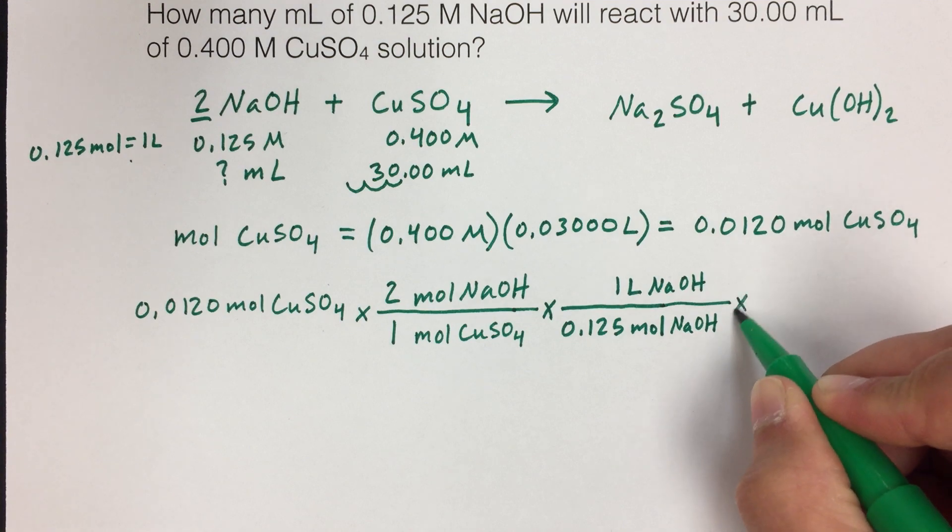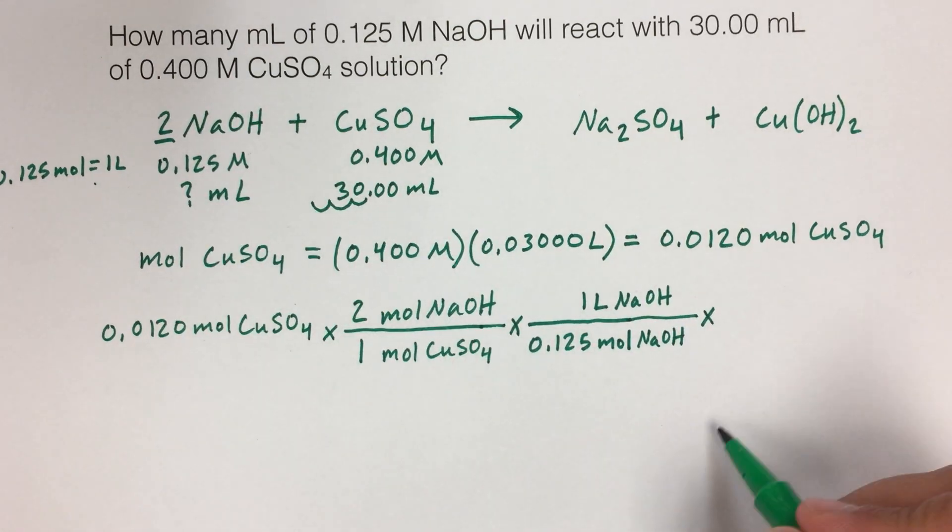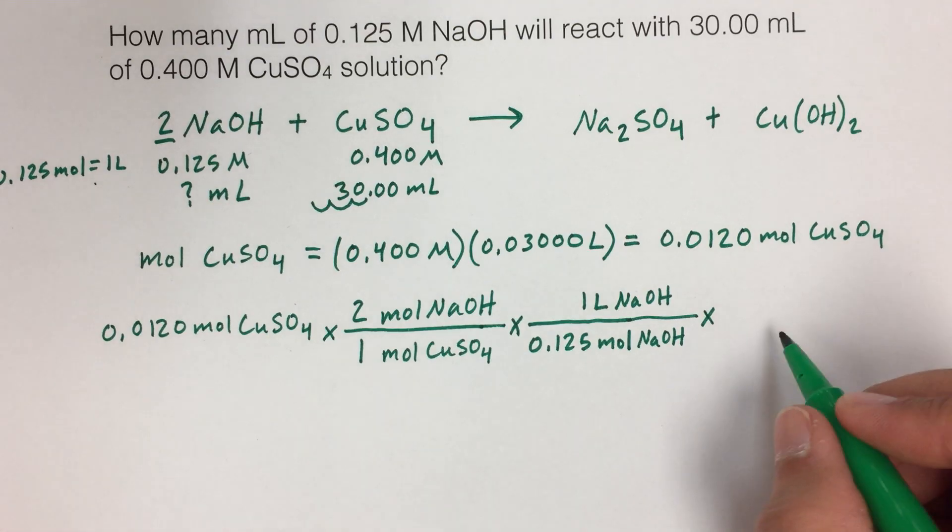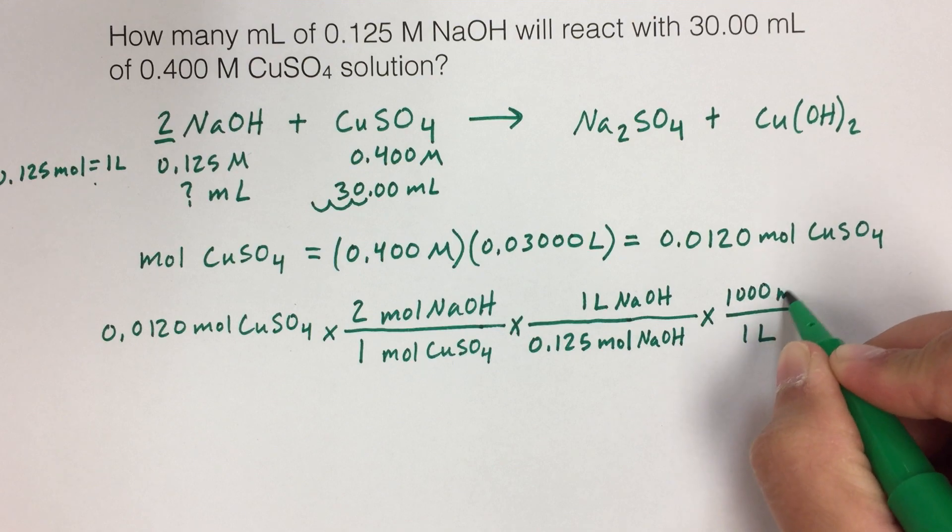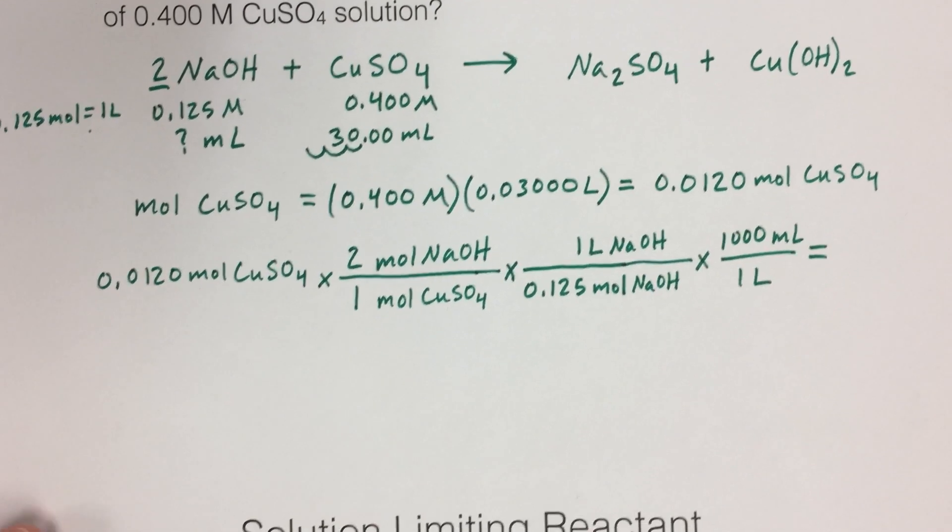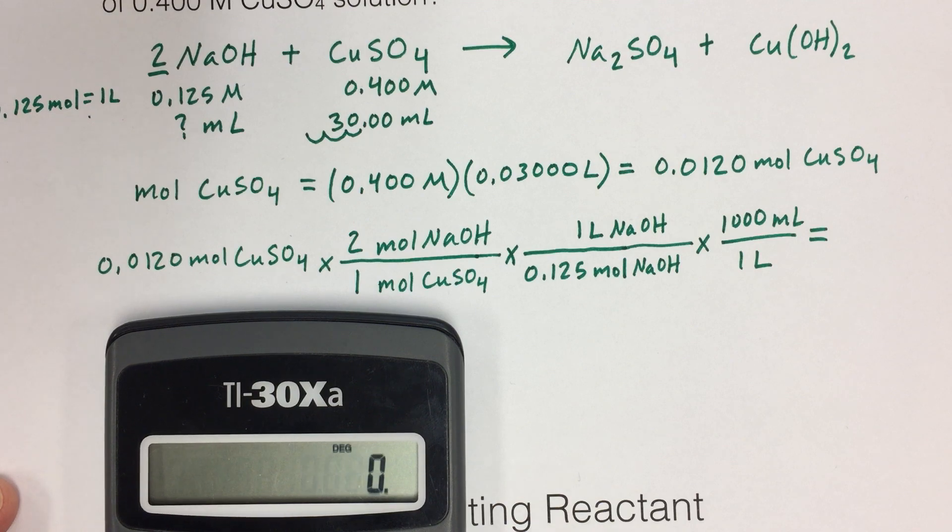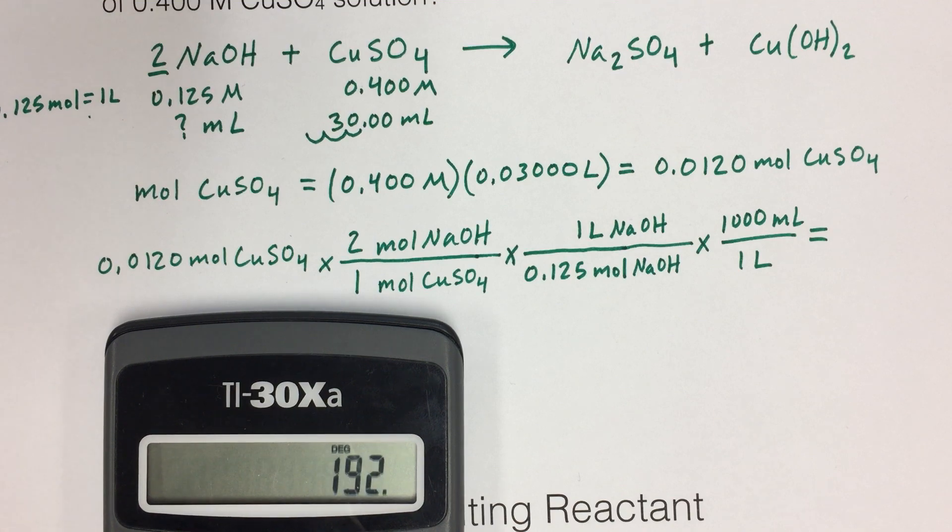And now we just need to do one tiny little conversion because the question is asking milliliters, and we have liters right now. So this is just going to be the relationship between liters and milliliters. And so I know that in every liter, there are 1,000 milliliters. All right, so now I have my setup. And now I can type this into the calculator.